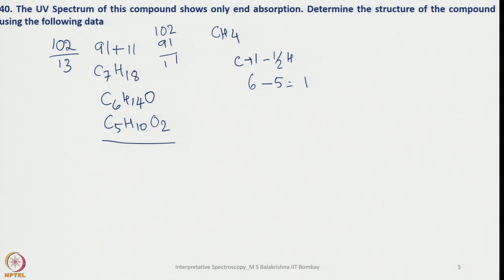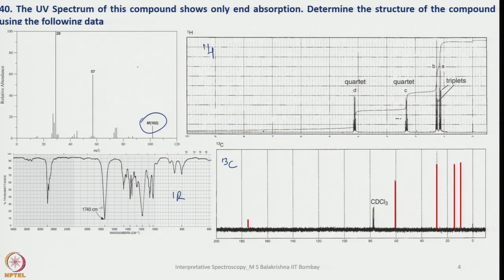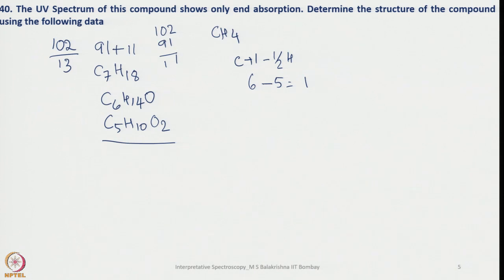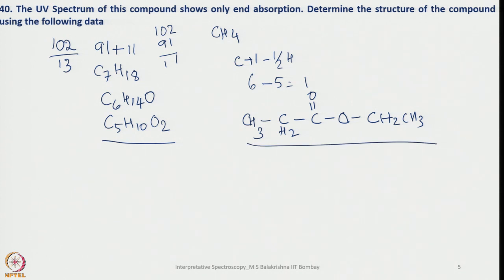Now we write the structure. Going back to the NMR, we have 2 quartets and 2 triplets. A quartet must be next to a methyl group, so we have 2 methyl groups. Looking at 13C NMR, there are 5 distinct carbon groups. We can propose a structure where this shows a quartet and a triplet on each ethyl side, with one being more deshielded than the other.